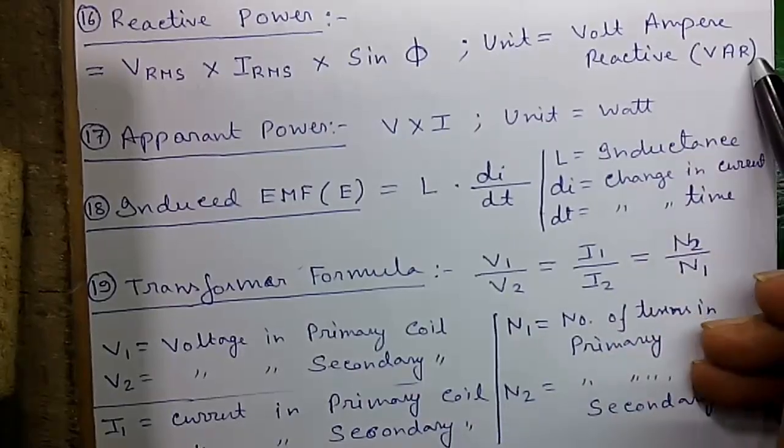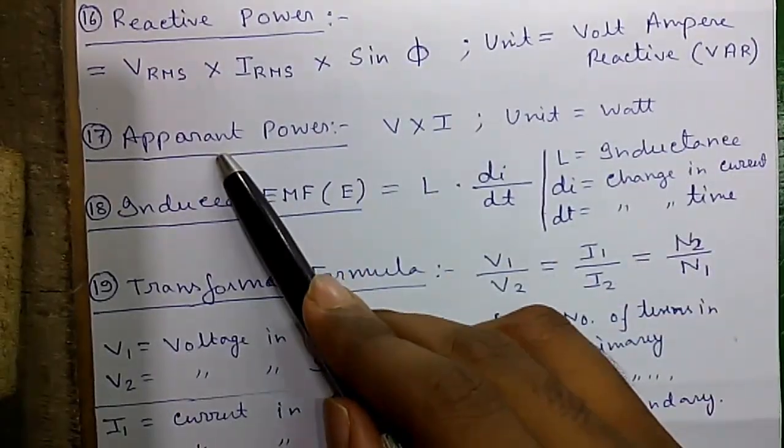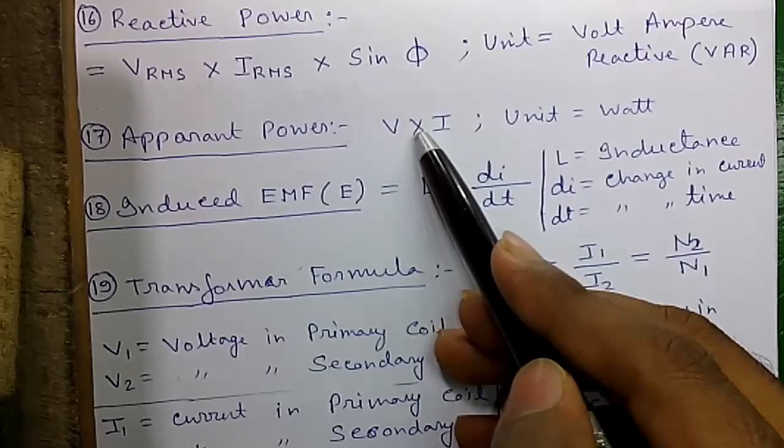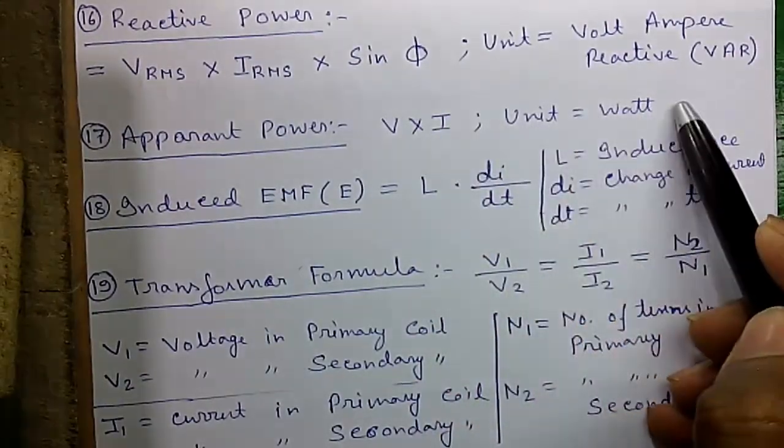The unit of reactive power is volt-ampere reactive, that is VAR. Formula 17: Apparent power is given by V into I. The unit is watt.